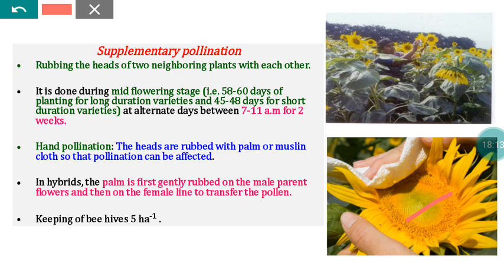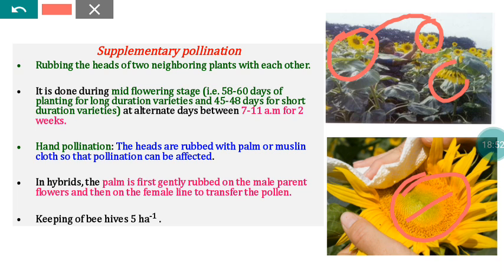Another method is muslin cloth wrapping. A muslin cloth is held in the hand and used to wrap one flower head, picking up pollen from that plant. The same cloth is then used to wrap another head, transferring the pollen. This is repeated across plants in a continuous manner. This method is also called hand pollination, and it ensures proper transfer of pollen from head to head, increasing seed set.